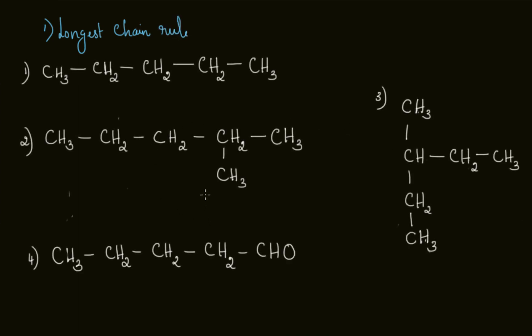The first rule is to find out the longest carbon chain in a given compound — this is the longest chain rule. We already learned this when studying root words, where we counted the total number of carbon atoms in the parent chain. Now, in addition to counting, we are also going to number the carbon atoms.